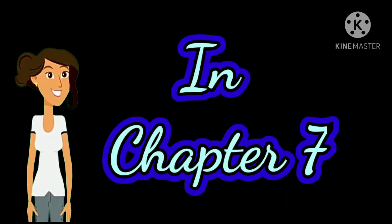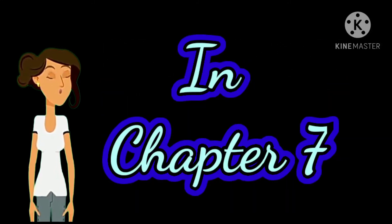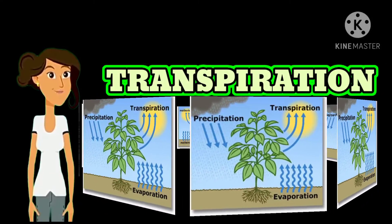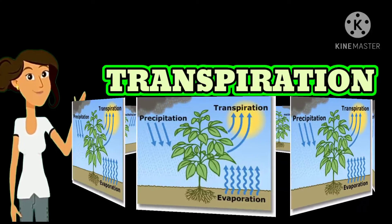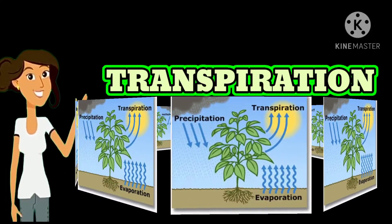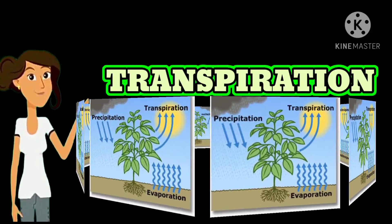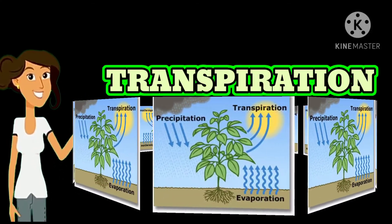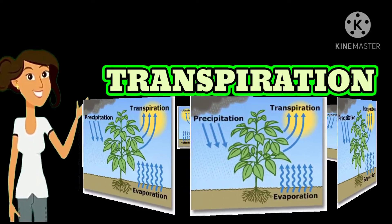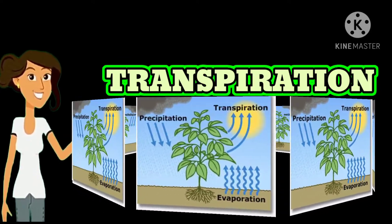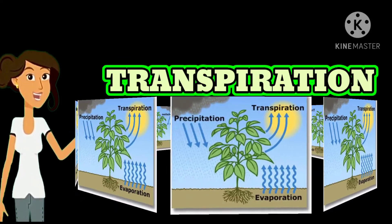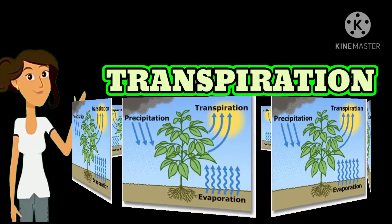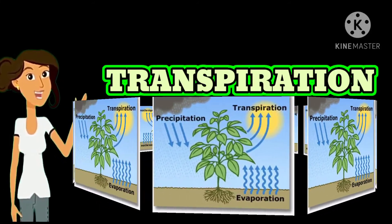Recall all your observations of Chapter 7 in your mind. Do you remember transpiration from plants? The process of water vapours coming from the leaves of plants is called transpiration. You can say it is the sweat of the leaves of the plants.